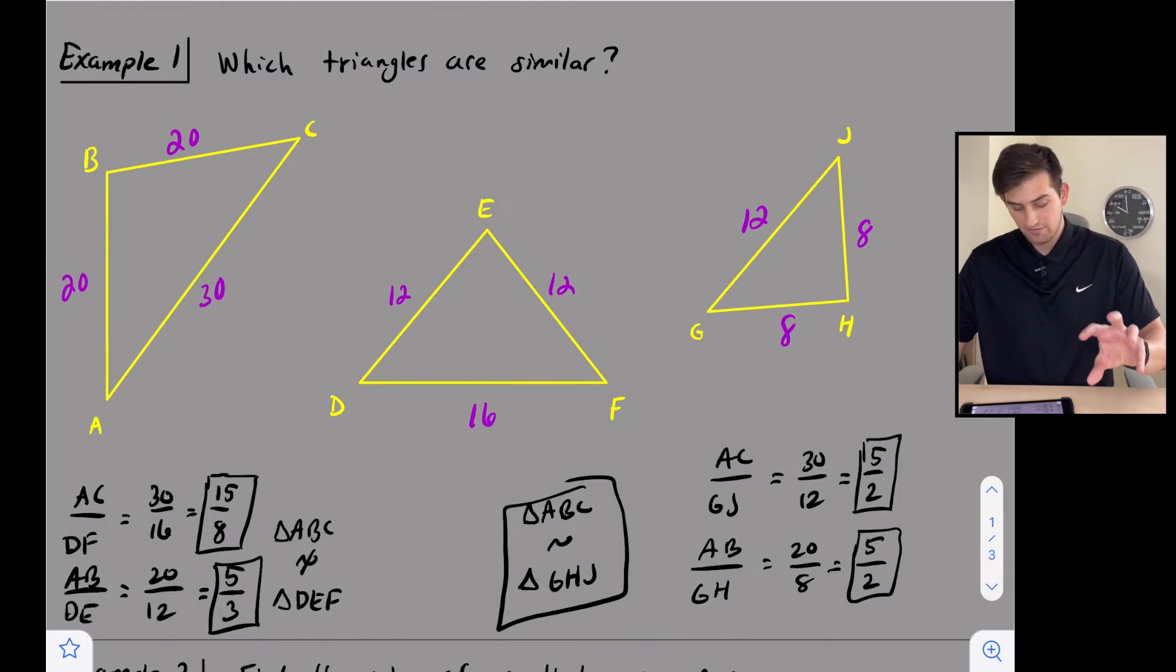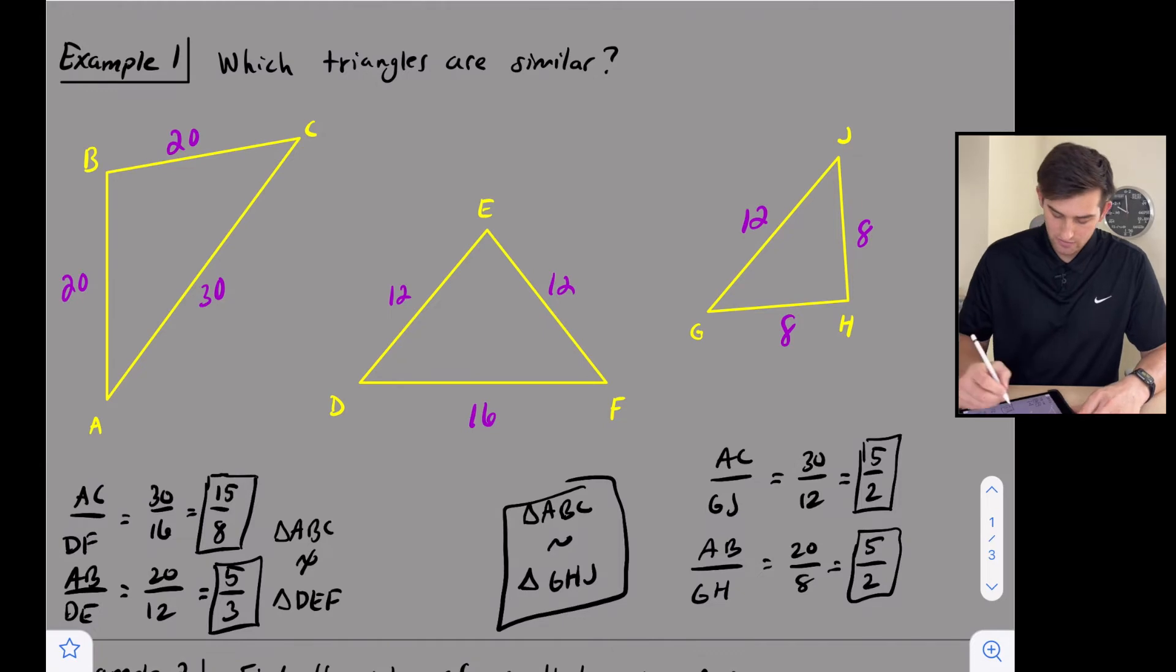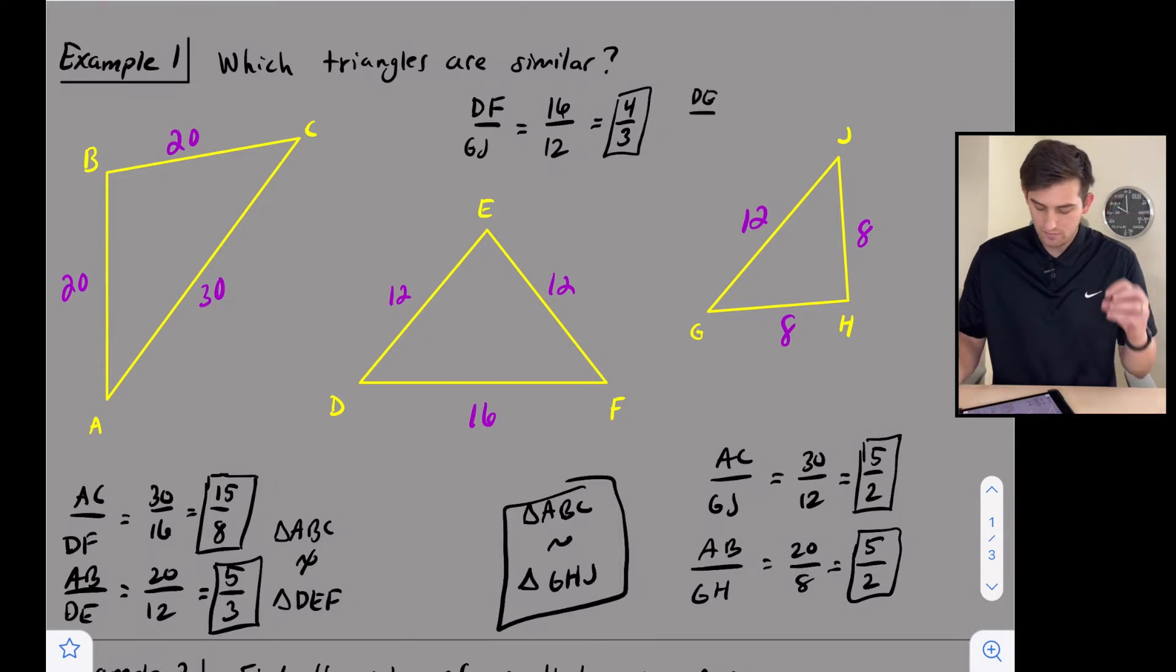So let's see if DEF is similar to GHJ. Let's start with side DF, it's the longest side here, and let's go to GJ. So this would be 16 over 12, and we can reduce this to 4 over 3. Now let's do DE from triangle DEF, which would be 12 over GH. So this is going to be 12 over 8. And when we reduce this, let's divide by 4, so we get 3 over 2.